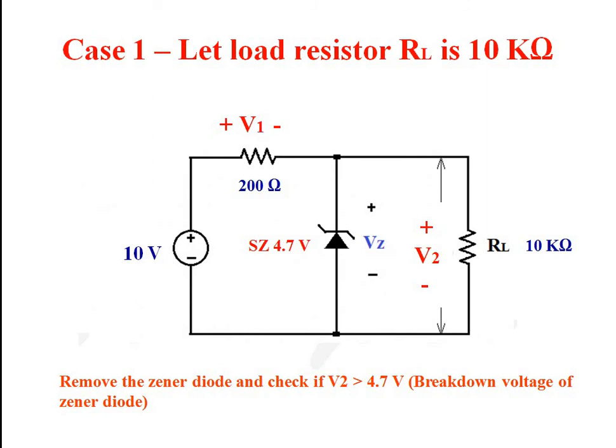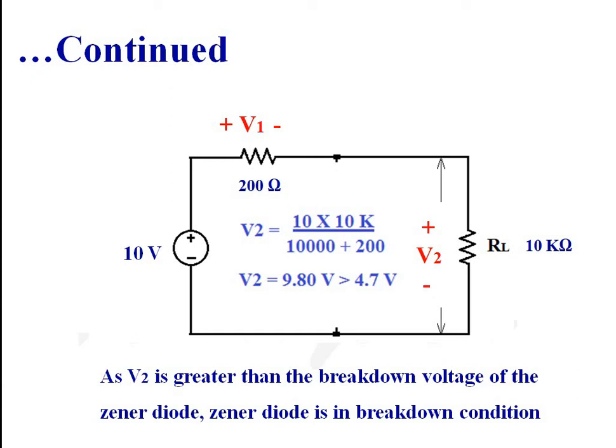First case: when load resistance RL is equal to 10 kilo ohms. The value of current limiting resistance is 200 ohms, unregulated DC voltage is 10 volt, and the zener diode is SZ 4.7 with a breakdown voltage of 4.7 volt. Removing the zener diode and applying KVL, we find V2 is equal to 9.8 volt, which is greater than the breakdown voltage of 4.7 volt. So the zener diode is in the breakdown condition.